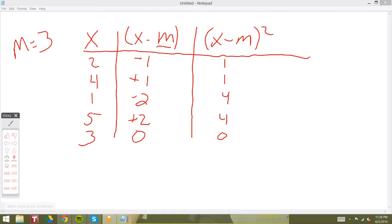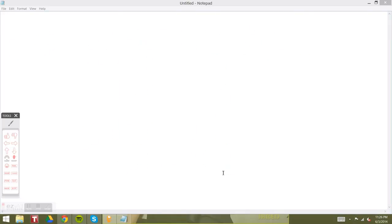Our final step is to take our squared deviation scores and simply add them all together. When you do that, you get 10, and this 10 is equal to our SS score.